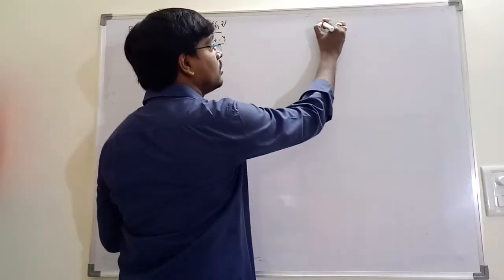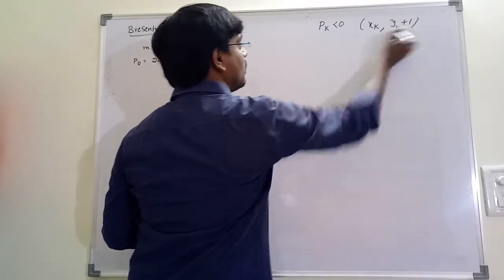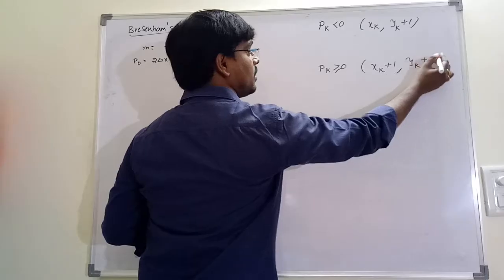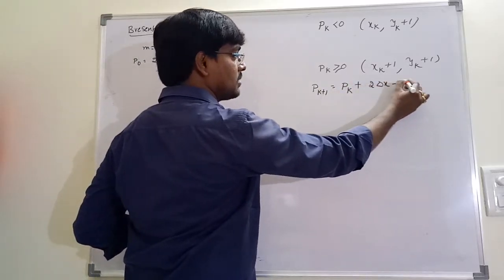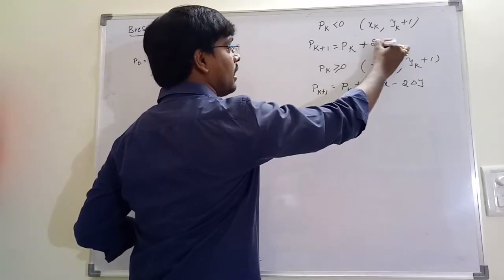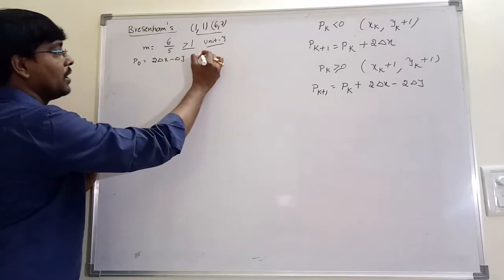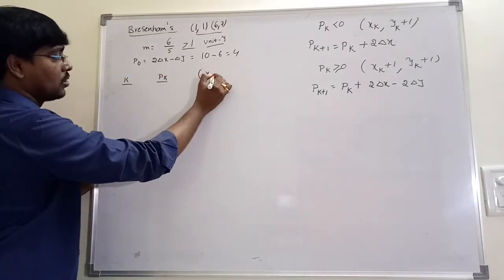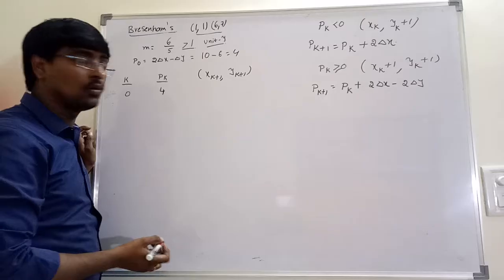For slope greater than 1: 2 delta x minus delta y. When pk is less than 0, the next coordinate is (xk, yk+1). When pk is greater than or equal to 0, the next x coordinate is xk+1 and y coordinate is yk+1. Pk+1 equals pk plus 2 delta x minus 2 delta y, or when less than 0, pk+1 equals pk plus 2 delta x. Calculate p0: delta x is 5, so 2 into 5 is 10, minus delta y which is 6, giving p0 equals 4.